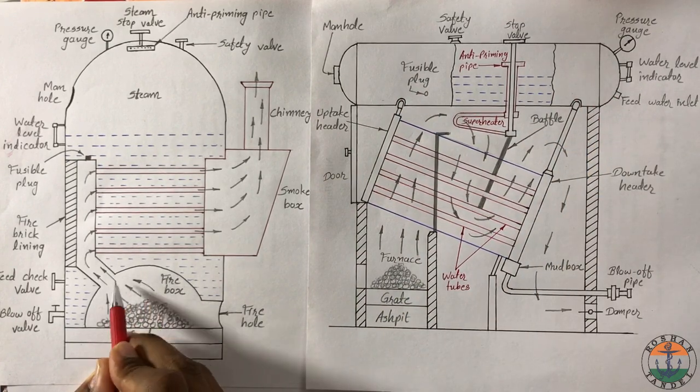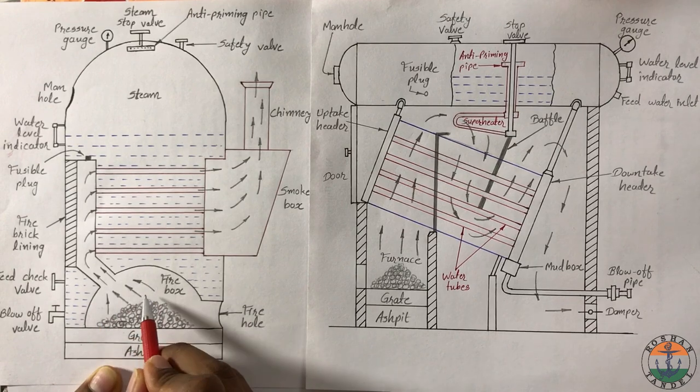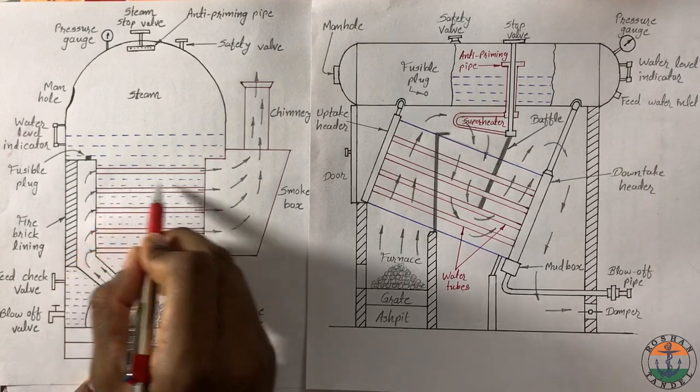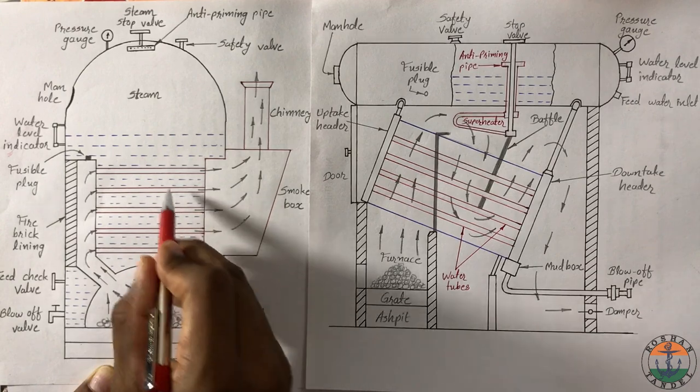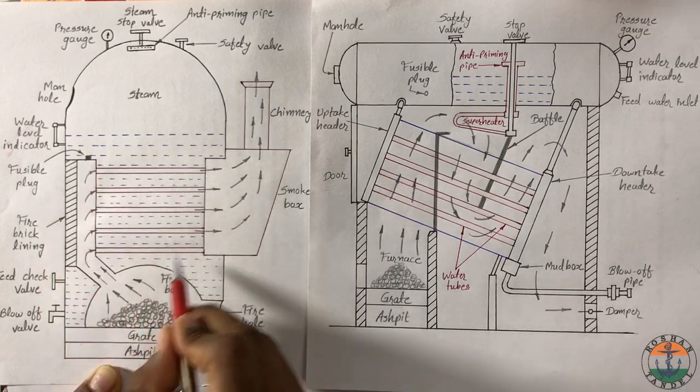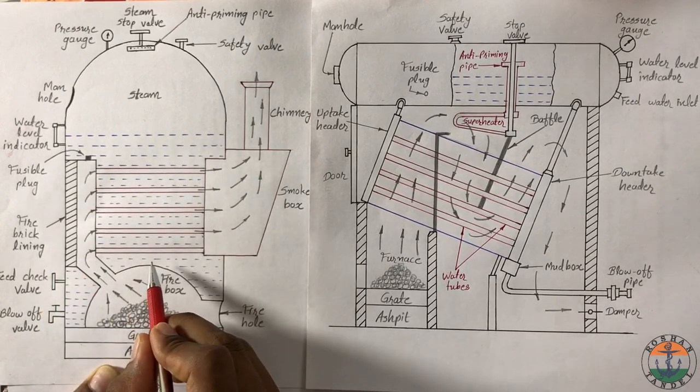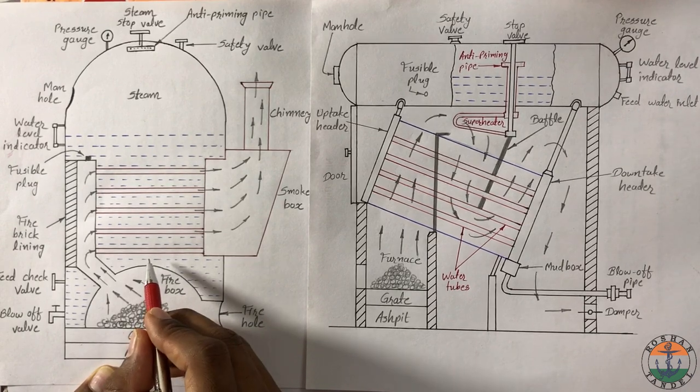Here flue gases produced by the combustion of fuel travel through the fire tubes and these fire tubes are surrounded by water, so it comes into the category of fire tube boiler.